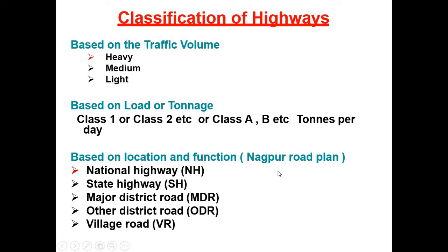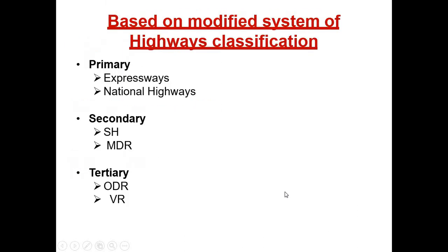Based on location and function, it is proposed based on the Nagpur Road Plan. It includes national highway (NH), state highway (SH), major district road (MDR), other district road (ODR), and village roads. Based on the modified system of highway classification, highways are classified into three categories: primary, secondary, and tertiary. In primary it is expressways and national highways; secondary is state highways and major district roads; and tertiary is other district roads and village roads.